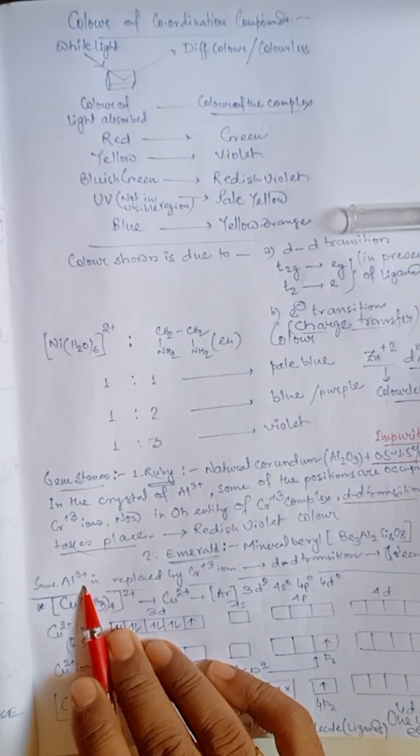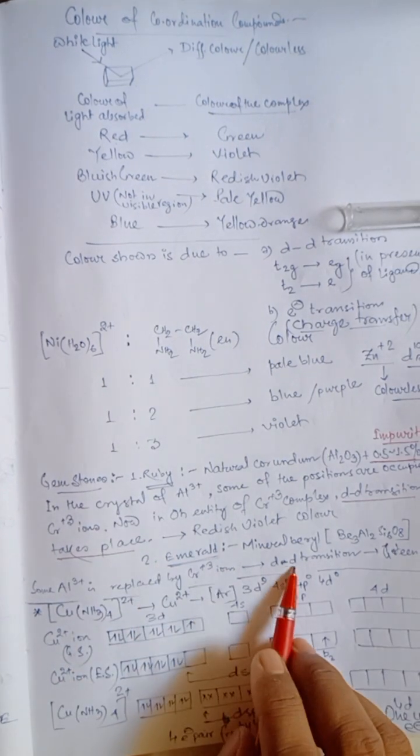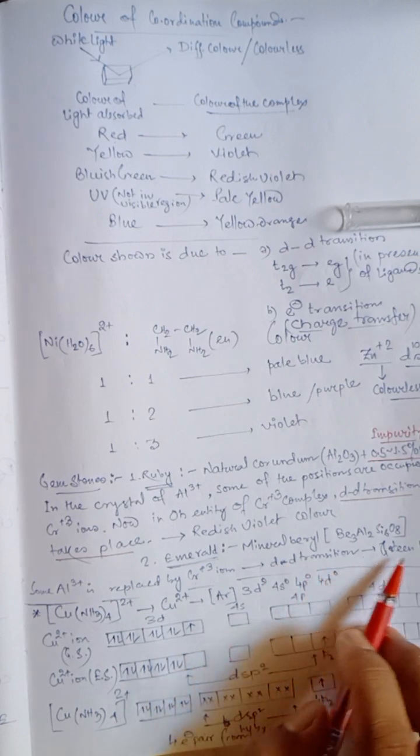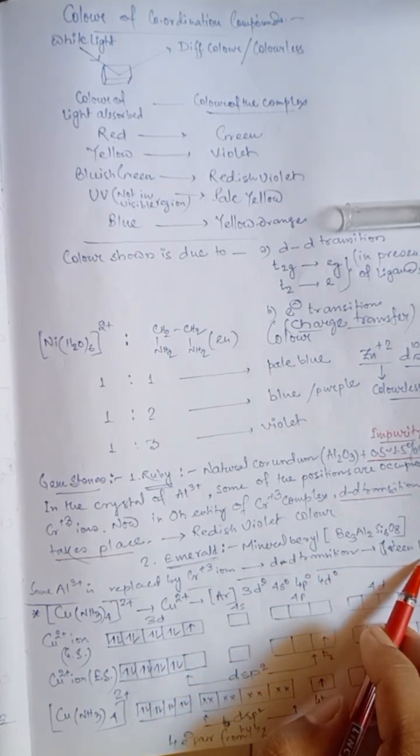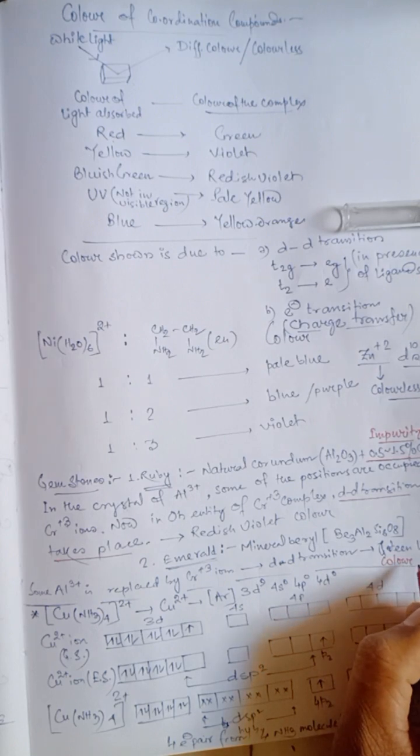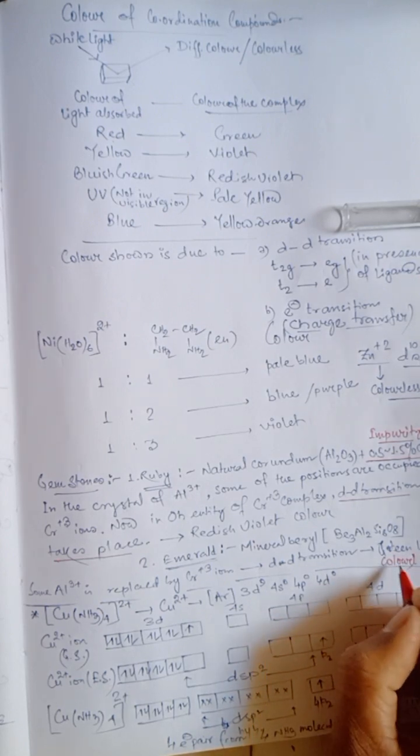And, again, same incident occurs here. DD transition occurs for the octahedral geometry of chromium 3 plus ion, we get green light. Green coloration of that particular gemstone.